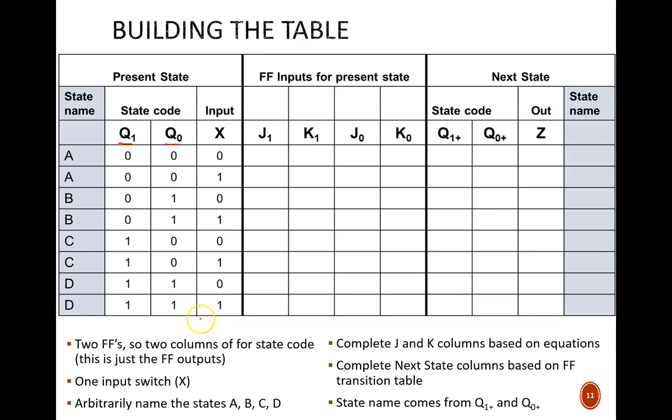It was a little cumbersome describing the full state code. Easier is if we give each state a name. Arbitrarily, but sensibly, I chose A, B, C, and D as the state names. Notice there are two rows with state A, because there are two rows with state code 0,0. That explains where the present state entries come from.